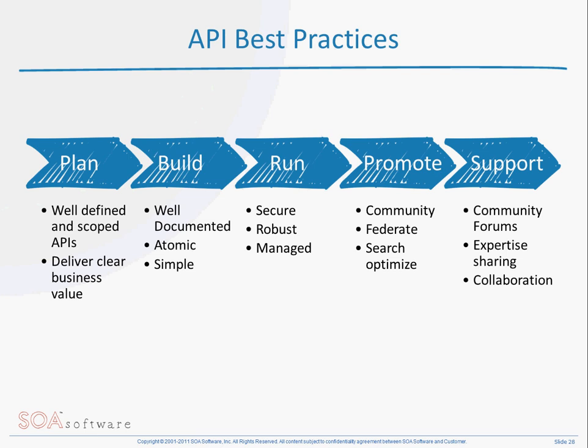Once the API has been planned, approved, and appropriately scoped, you then need to build the API. The API needs to be well-documented, it needs to be atomic, and it needs to be simple. What's going to really encourage a developer is to make an API easy to understand.